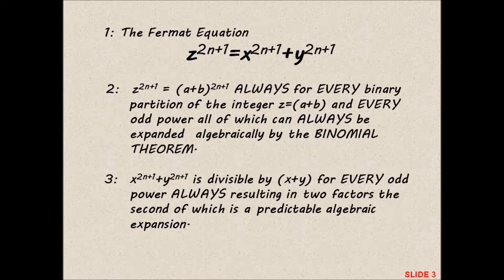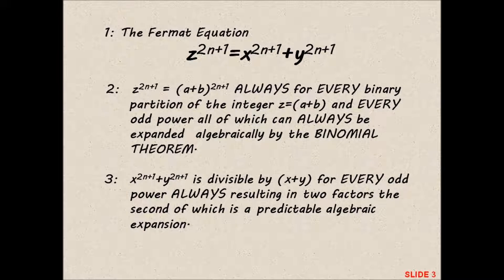1. Fermat equation. Z to the power 2n plus 1 is equal to x to the power 2n plus 1 plus y to the power 2n plus 1.